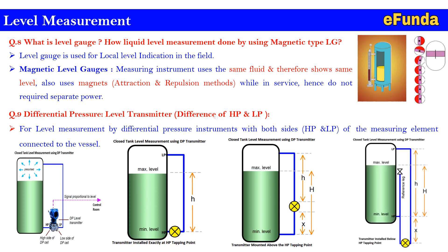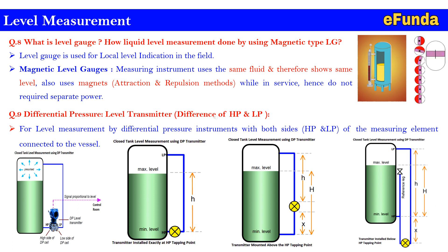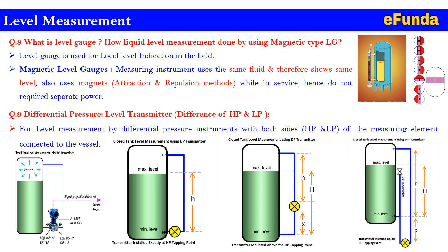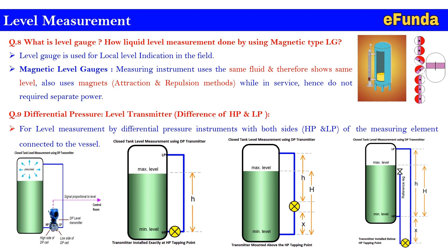The third configuration shows the transmitter mounted above the HP tapping point — this is non-preferable due to the chance of bubble formation in the impulse line. The fourth configuration has the transmitter installed below the HP tapping point, which always introduces an error that can be compensated by suppressing or elevating the transmitter zero.